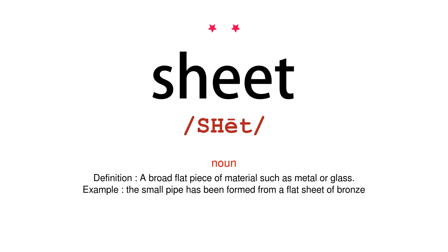Noun. Definition: a broad flat piece of material such as metal or glass. Example: the small pipe has been formed from a flat sheet of bronze.